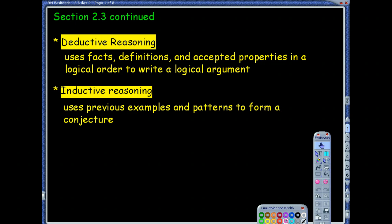Deductive reasoning uses facts, definitions, and accepted properties in a logical order to write a logical argument. This is what mathematicians love. This is what we crave because we want the facts. We want to use those definitions and those properties that we've talked about to be able to write a logical order to make a logical argument. We want to have the cold, hard facts.